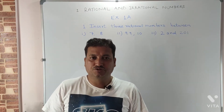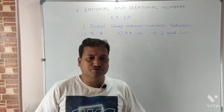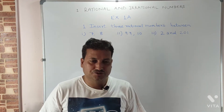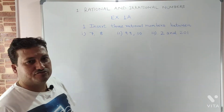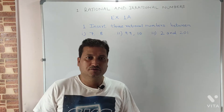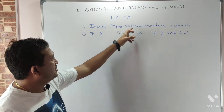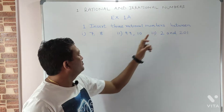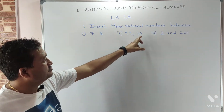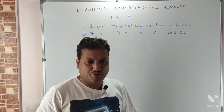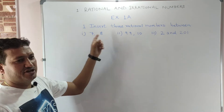Dear students, today we will learn Chapter 1: Rational and Irrational Numbers of 9th standard. Today we will solve Exercise 1A. The first question is: insert three rational numbers between seven and eight, nine point nine and ten, and two and two point zero one. Let's see how to find three rational numbers between seven and eight.